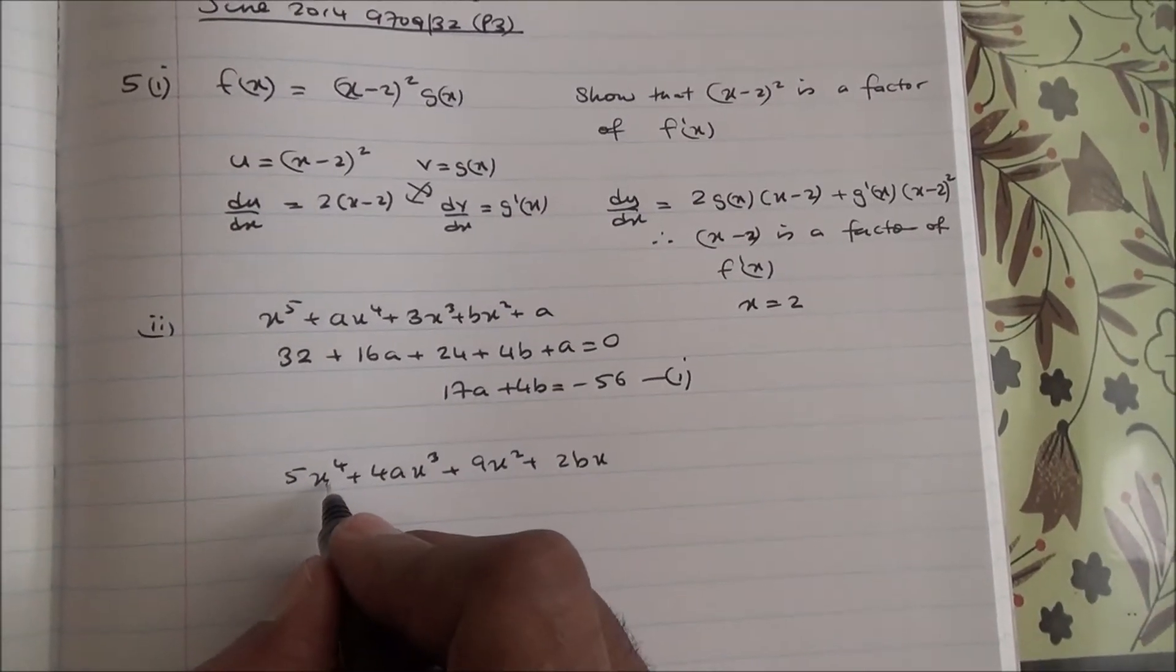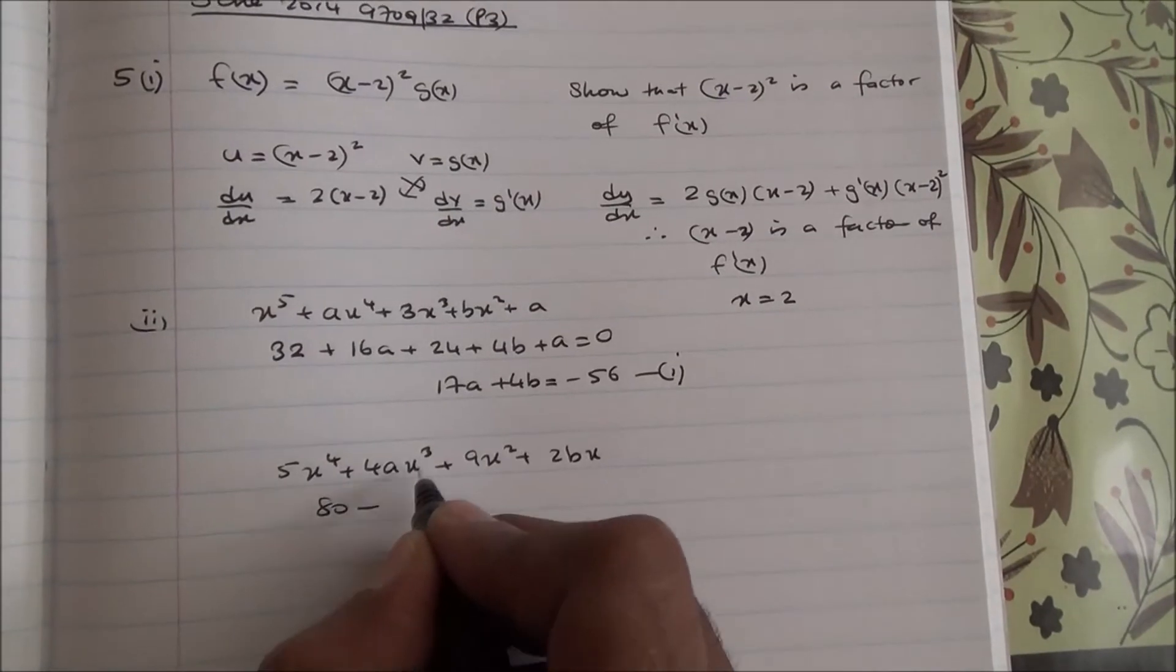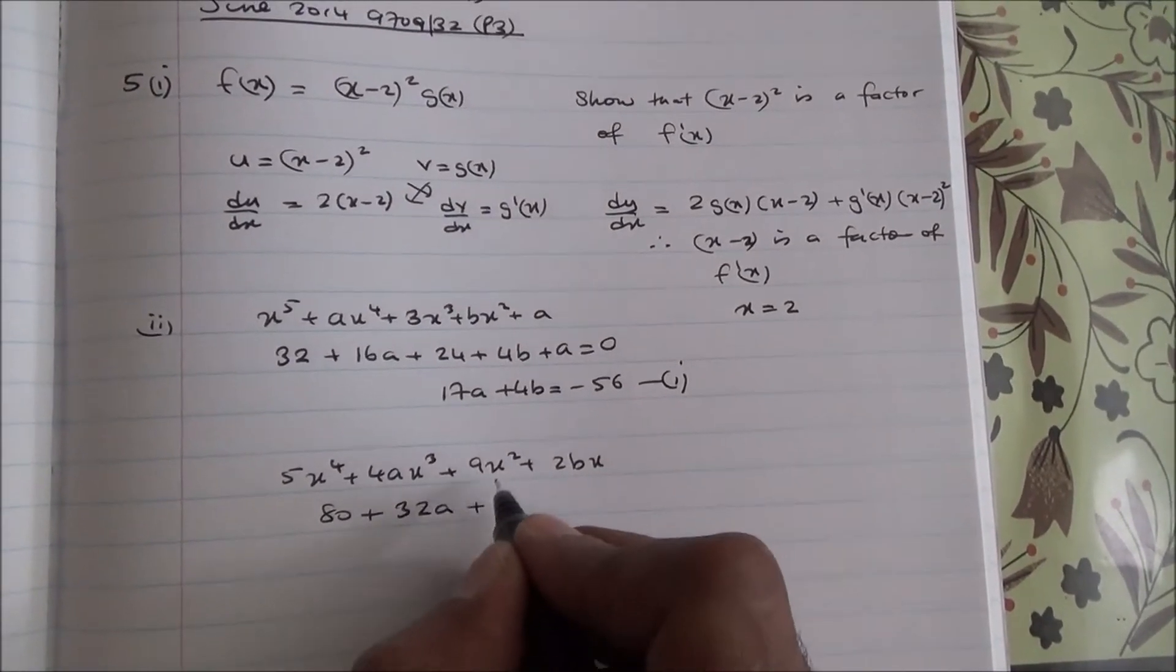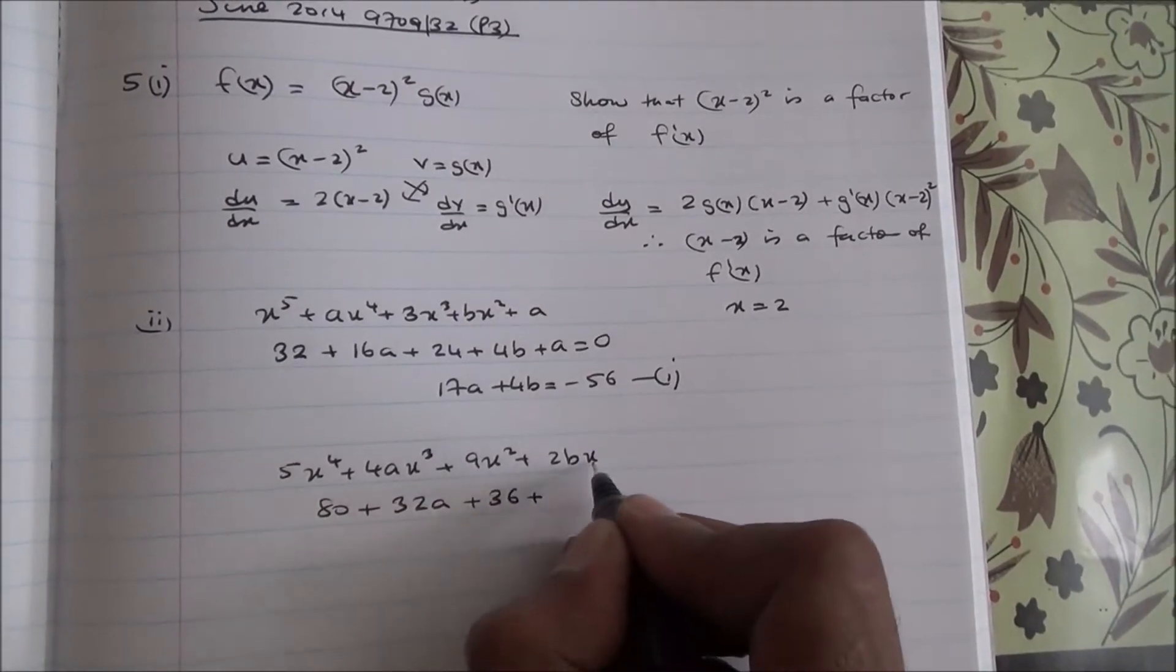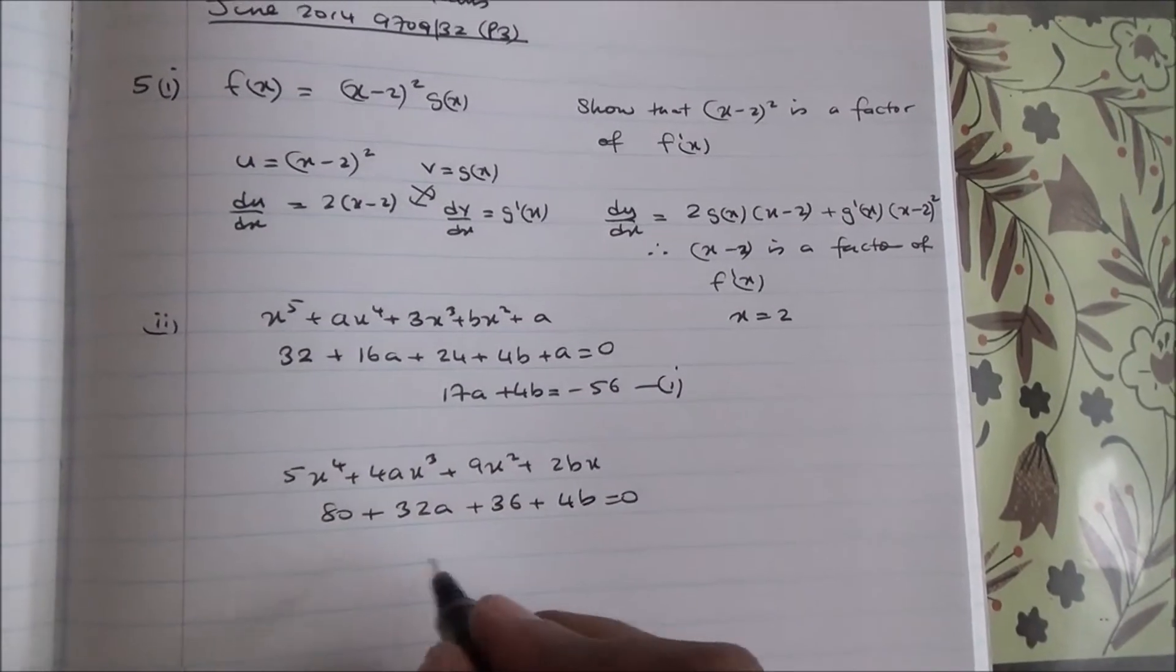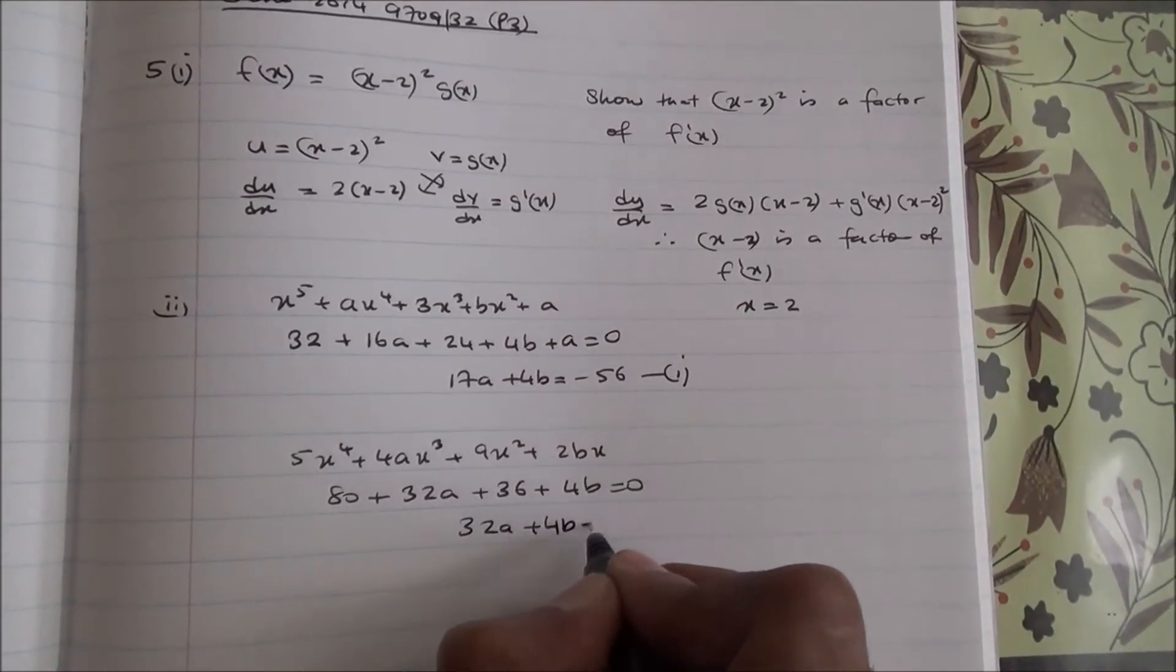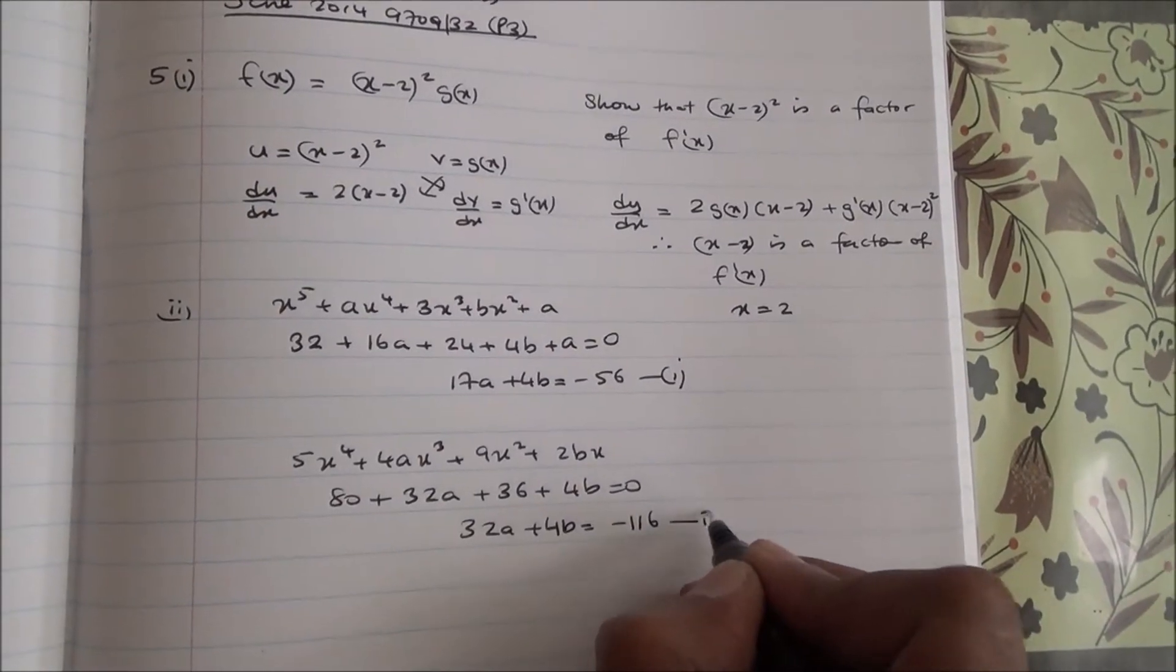all right, so that's going to become 2⁴ is 16, times 5 is 80, plus 2³, 8, 8×4 is 32, then you've got a, plus 2² is 4, 4×9 is 36, plus 2×2 is 4, then 4b = 0. So, this equation is then 32a + 4b = -116, second equation.